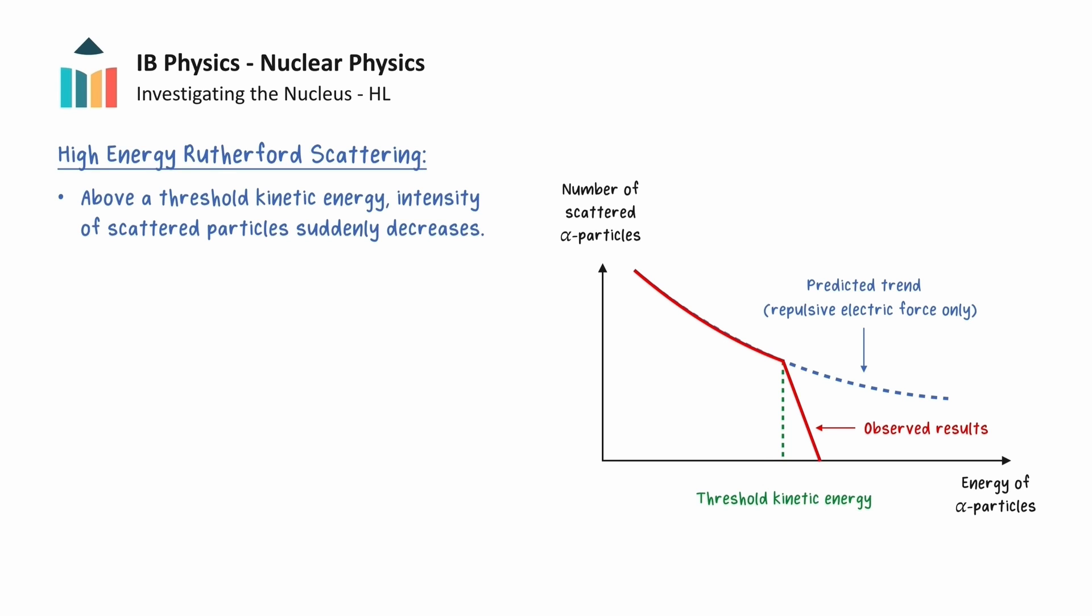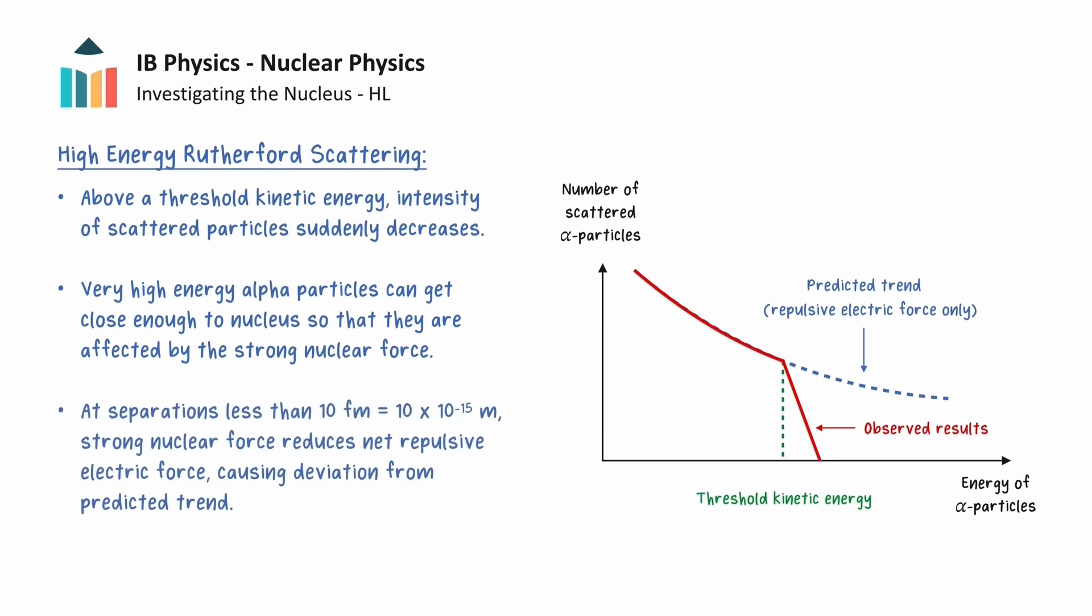The reason for this deviation is that alpha particles with a high enough energy can get close enough to the nucleus, where they can interact with the nucleus via the attractive strong nuclear force, in addition to the repulsive electric force. At separations less than 10 centimeters, the strong nuclear force begins to have the effect of reducing the net repulsive force, and this causes the number of alpha particles detected at a given angle to deviate from the expected amount.